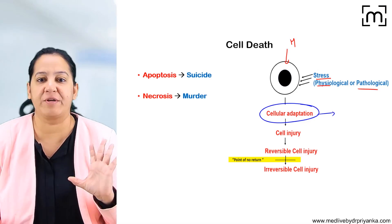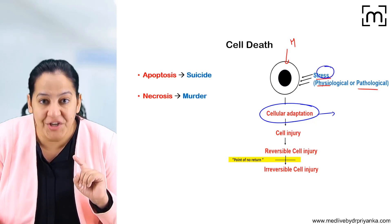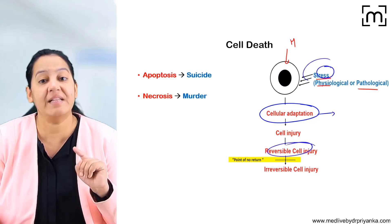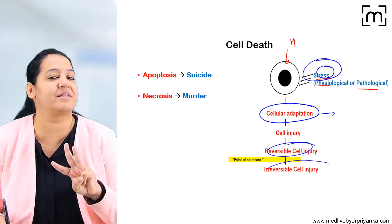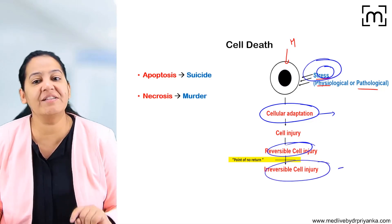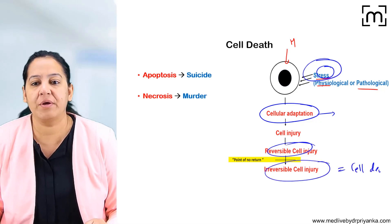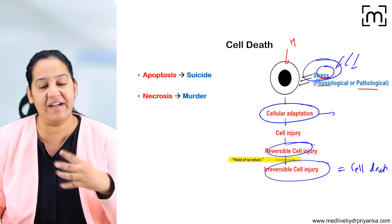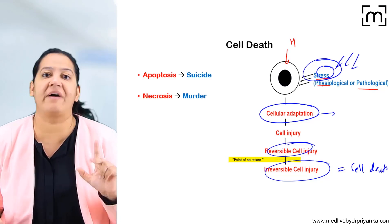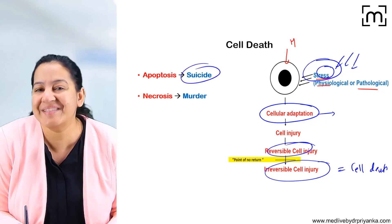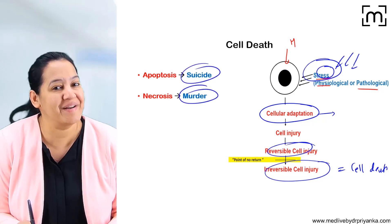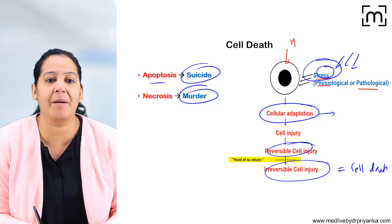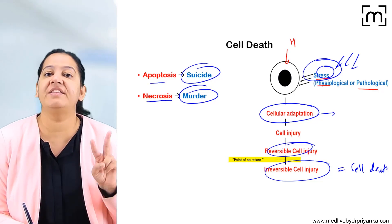If the stress continues, the second thing that happens is reversible cell injury. If the stress still continues, the third and last thing is irreversible cell injury, which is equal to cell death. So if the stress continues and continues, the summary is that the cell will die. There are two mechanisms by which the cell will die: either the cell can commit suicide or the cell can commit murder.